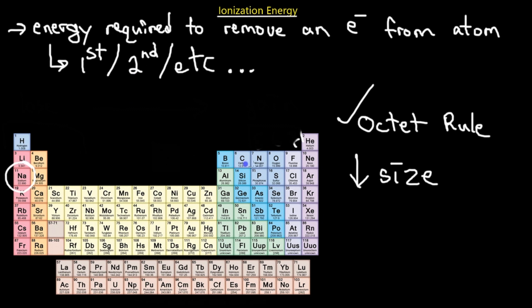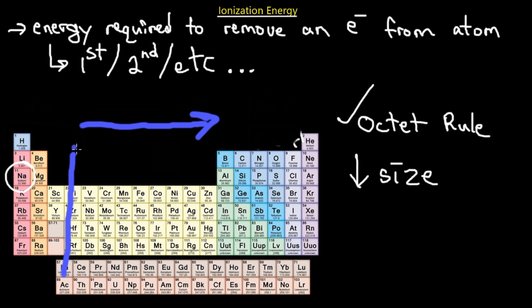The ionization energy trend on the periodic table increases as you go further to the right and increases as you go upwards. The reason it increases going upwards is that you have fewer shells, meaning electrons are closer to the nucleus and therefore harder to remove from the outer shell.